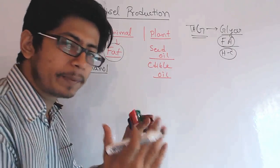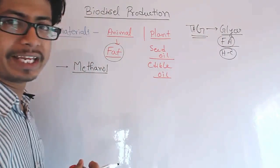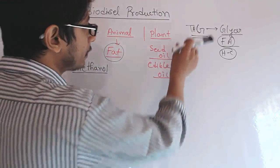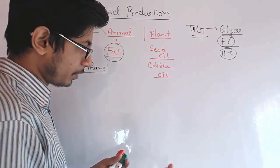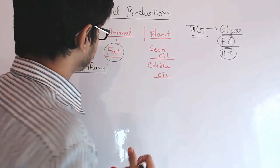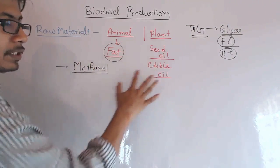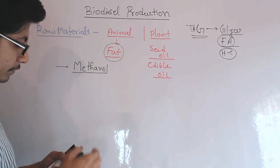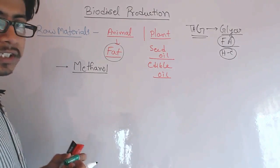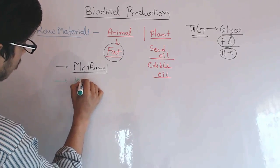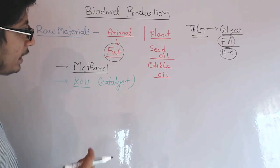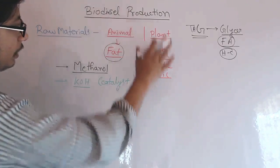What we need to do is separate the glycerol backbone from the hydrocarbon chain. After this process is complete, we generate two things: the glycerol itself, which we can convert into glycerin, and the hydrocarbon chain, which is biodiesel. For this we need methanol to interact with the fat, and we also need a catalyst. The catalyst used here is KOH — potassium hydroxide — which acts as a catalyst to make this reaction happen.